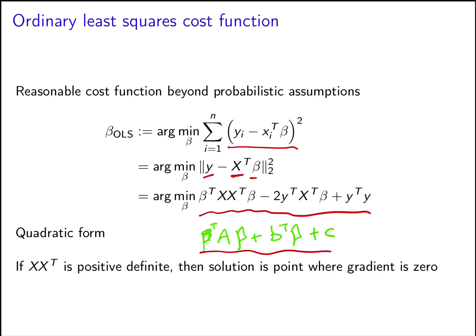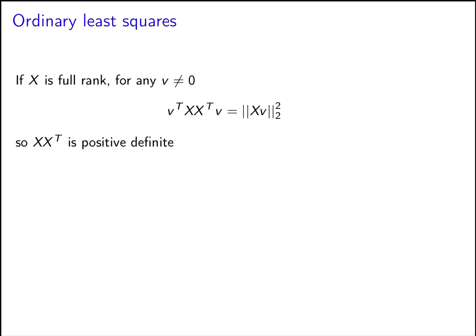So now we should ask whether the matrix XX^T is positive definite. In fact, it is, as long as X is full rank, because we can write v^T XX^T v for any vector v as the squared norm of Xv, and if Xv is not zero then this squared norm is going to be positive. So this means that the matrix XX^T is positive definite. Notice that this matrix is essentially the sample covariance matrix.